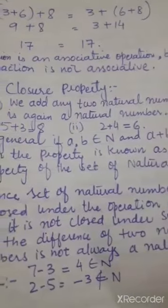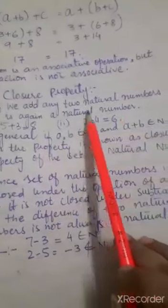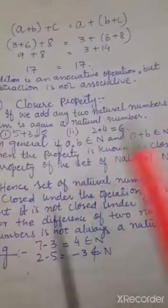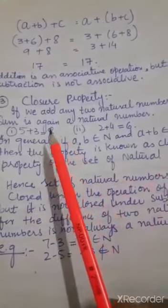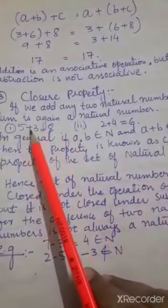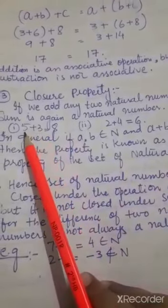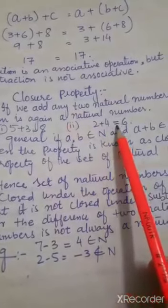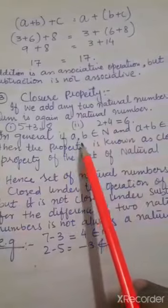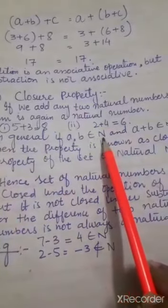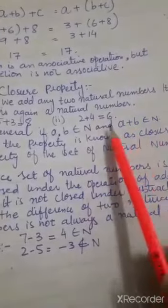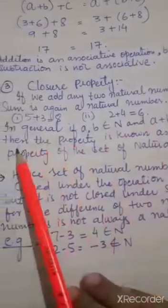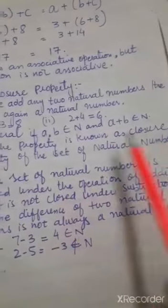Ab iski third property hai: closure property. If we add any two natural numbers, the sum is again a natural number. Koi bhi do natural numbers ko add karte hain toh uska answer natural number mein aana chahiye. For example, 5 plus 3 equals 8 — 5 is a natural number, 3 is also a natural number, and 8 is also a natural number. Another example: 2 plus 4 equals 6. In general, if a and b are members of natural numbers, and a plus b is also a member of natural numbers, then this property is known as closure property.